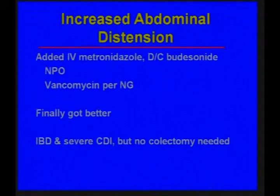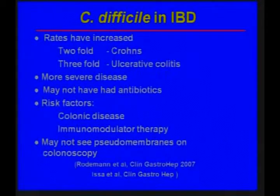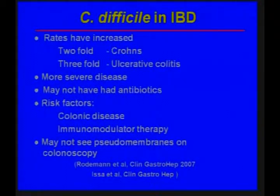This is a case of inflammatory bowel disease and severe Clostridium difficile infection in a patient who did not ultimately need a colectomy. Our IBD patients appear to be more susceptible to Clostridium difficile, and this risk is much greater with either colonic Crohn's disease or ulcerative colitis — much more so with colon disease than small bowel disease. When they have this combination of C. difficile and IBD, they have increased morbidity and mortality compared to patients with either IBD alone or C. diff alone. Importantly, they might not even have had antibiotics, and the two major risk factors are having colonic disease or immunomodulator therapy.